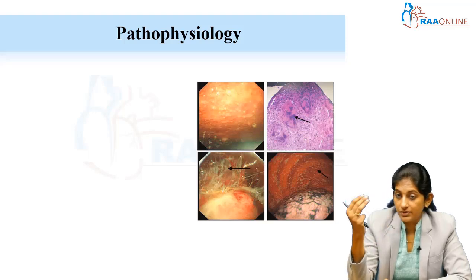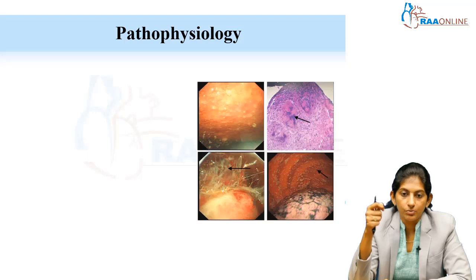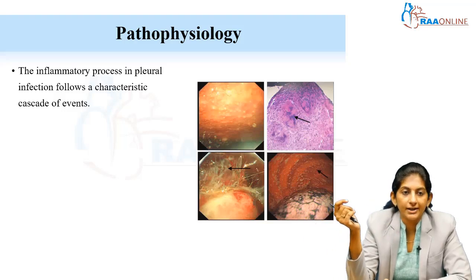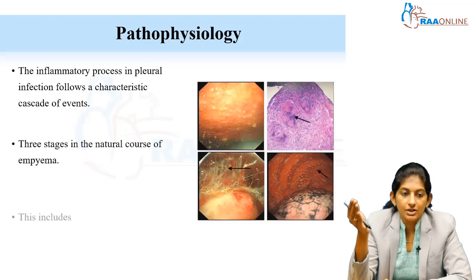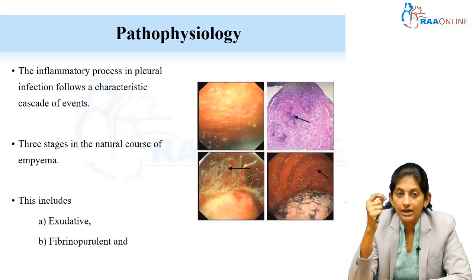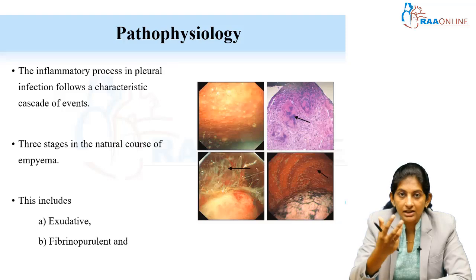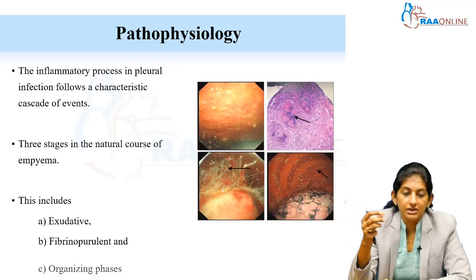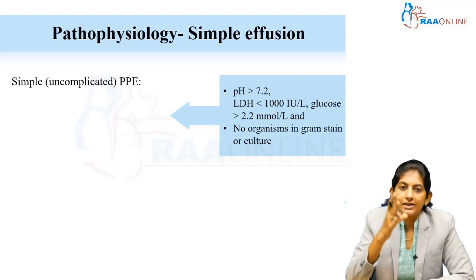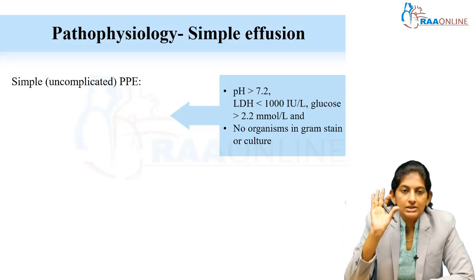These are VATS — video-assisted thoracoscopy — images of pleural effusion. Parapneumonic effusion progresses through a cascade of stages: first the exudative phase, due to inflammation causing exudation; next the fibrinopurulent phase, where pus collection begins; and finally the organizing phase.